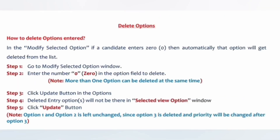The next step is to delete an option. Similar to what you did for modifying, go to the steps for delete options, select and open the window, and in front of whatever option you want to delete, put zero. Zero means delete — you are not giving it any priority number. That is how you delete options: put zero in front of all options you want to delete.